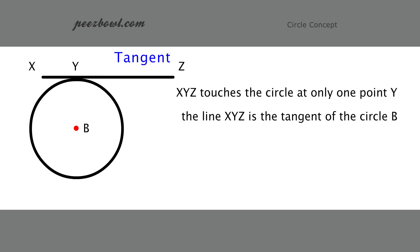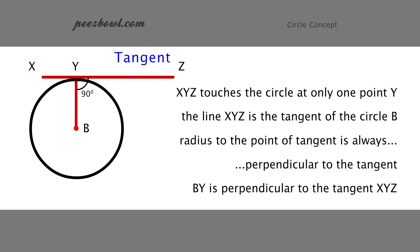One point to observe here is that radius to the point of tangent is always perpendicular to the tangent. So, BY is perpendicular to the tangent XYZ.